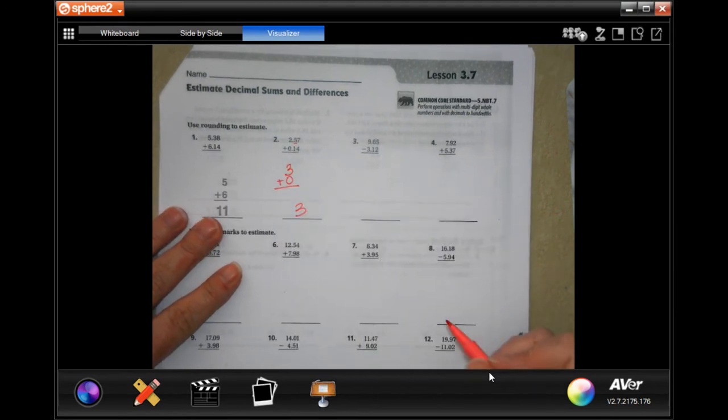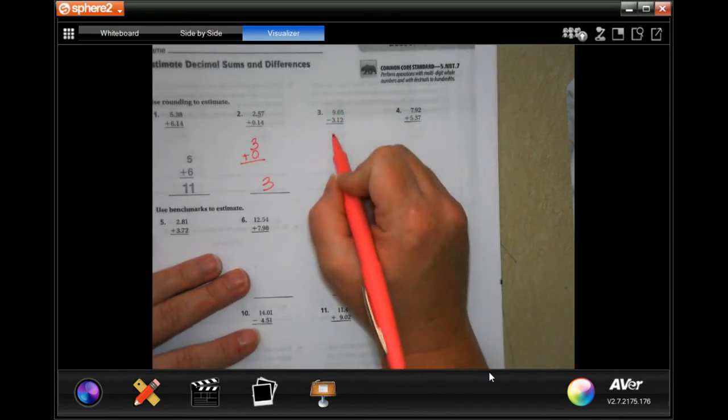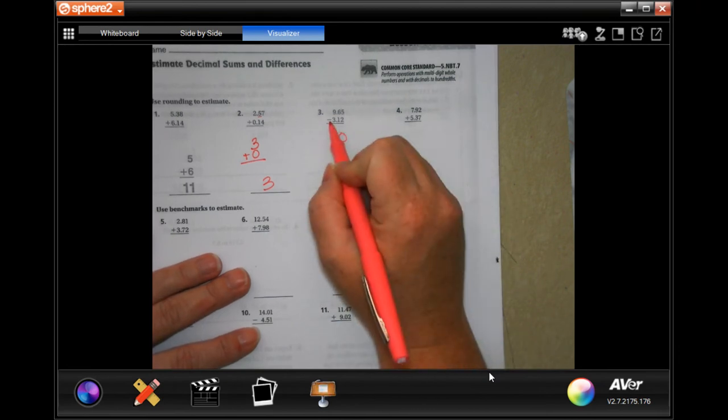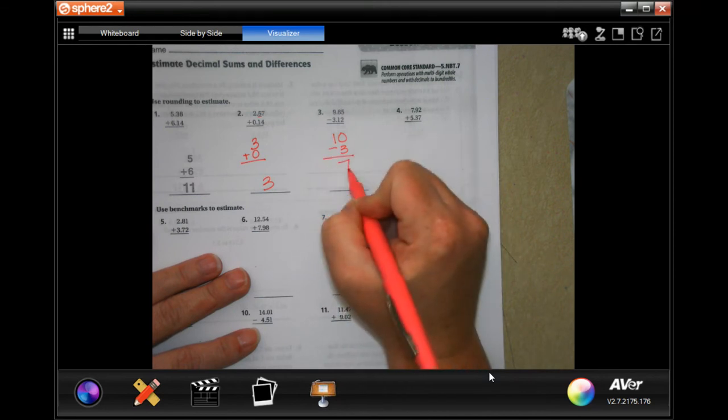3. Now 9.65, that 6 is going to tell the 9 to go up to a 10. We're doing subtraction. The 1 is going to tell the 3 to stay the same. We're subtracting, we get 7.